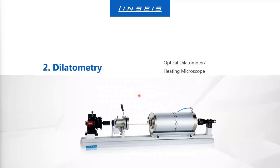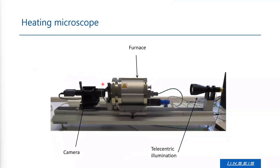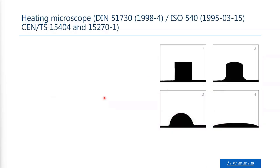The second type of dilatometers we have are optical dilatometers or heating microscopes. They consist of a furnace to heat samples to very high temperatures. A light source shines into the furnace, and on the other side there is a camera which records individual pictures or movies. The shadow images of the samples are recorded.